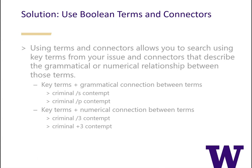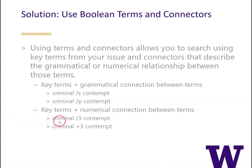There are two main ways to connect the terms: grammatically and numerically. Grammatical connections might be something like I want to find the term criminal within the same sentence as contempt, or within the same paragraph as contempt. Numerical connectors might include something like I want to find the term criminal within three words of contempt, or I want to find the term criminal preceding the word contempt within three words.